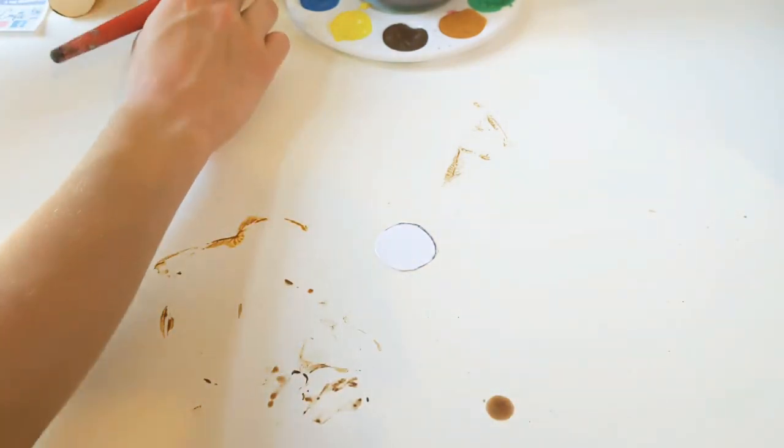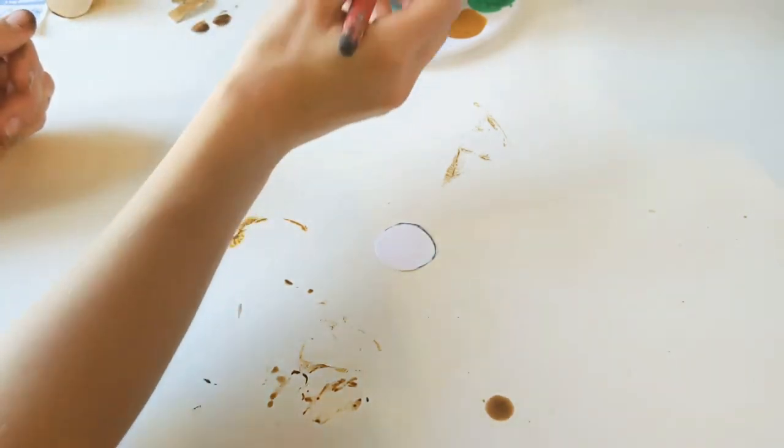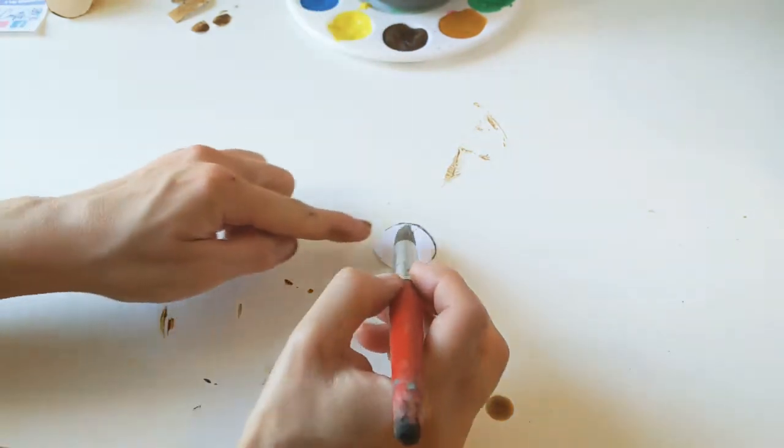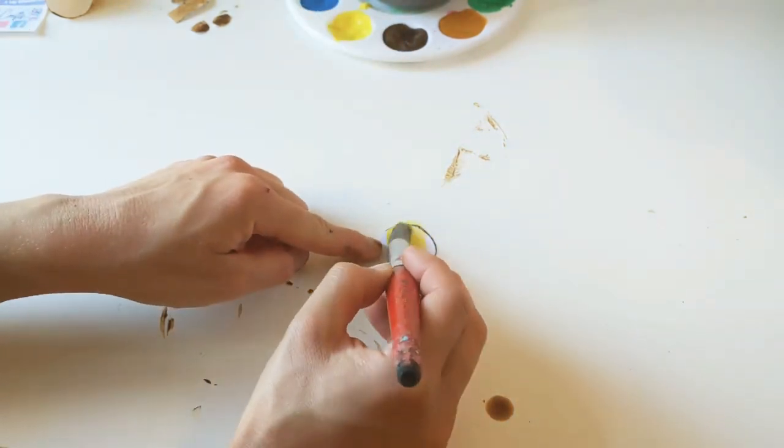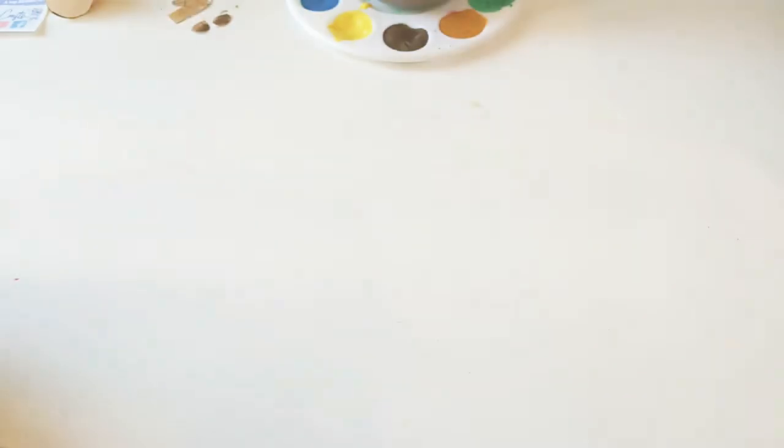I can move these ones up out of the way and then I'm going to take the yellow color and I'm going to do my sloth's face in a nice bright yellow.